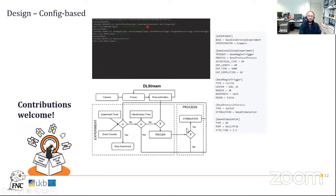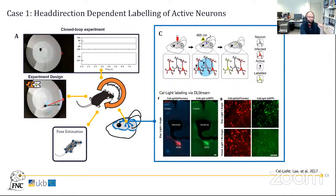Using config-based experiments, we have a base conditional experiment, an optogenetic experiment, and a trial experiment — allowing you to start doing experiments directly rather than going deep into DeepLab Stream's internals. We're also working on script-based configuration of these config files, though they can also be changed in a text editor.